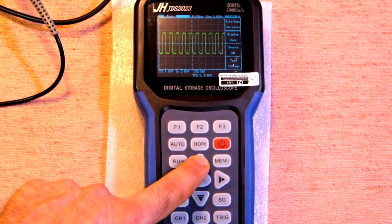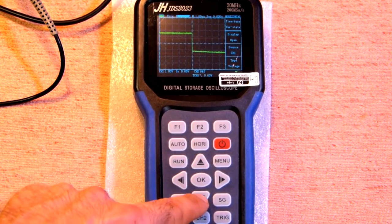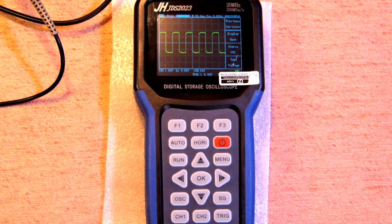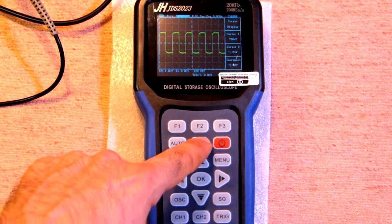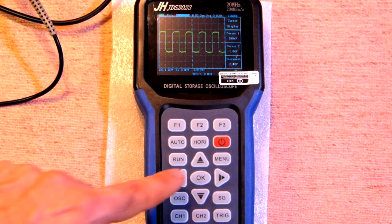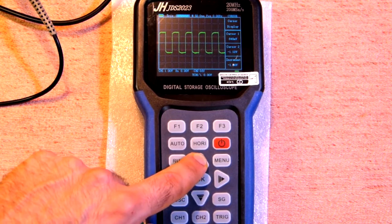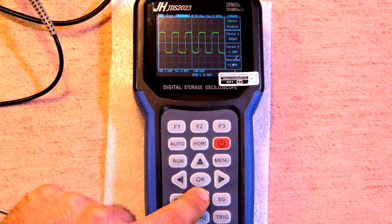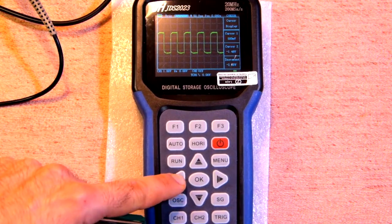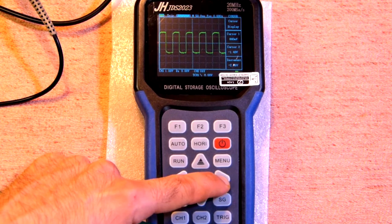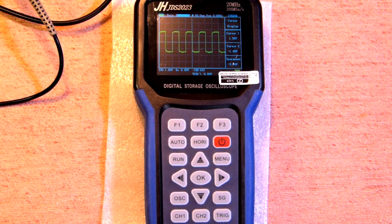So in horizontal by pressing up and down we can change the time base and in case we would like to measure a voltage we can go to the second mode of this button. Now we have horizontal and the second mode is cursor and in case we press this up and down we adjust this cursor and also we can adjust this red cursor. And all the data we have here.